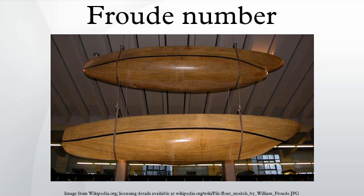Named after William Froude, the Froude number is based on the speed-to-length ratio as defined by him. It is defined as the ratio of a characteristic velocity to a characteristic water wave propagation velocity. The Froude number is thus analogous to the Mach number. The greater the Froude number, the greater the resistance.